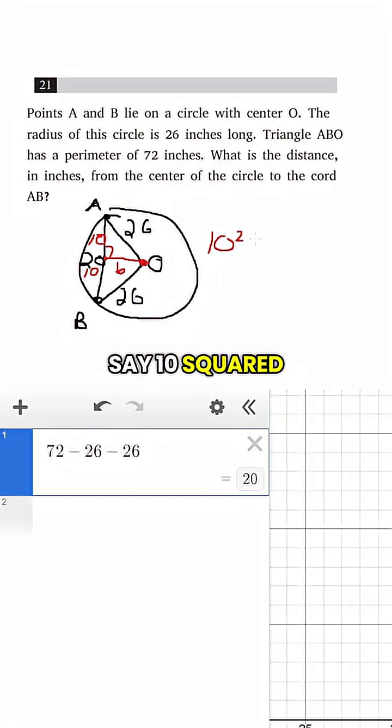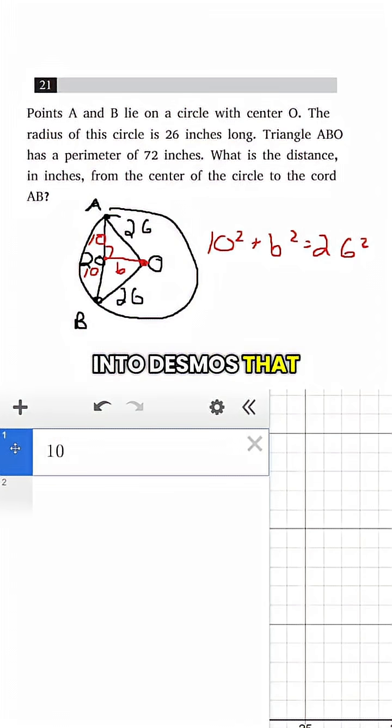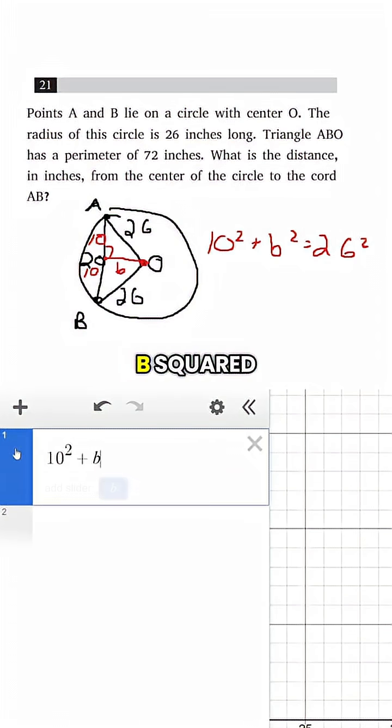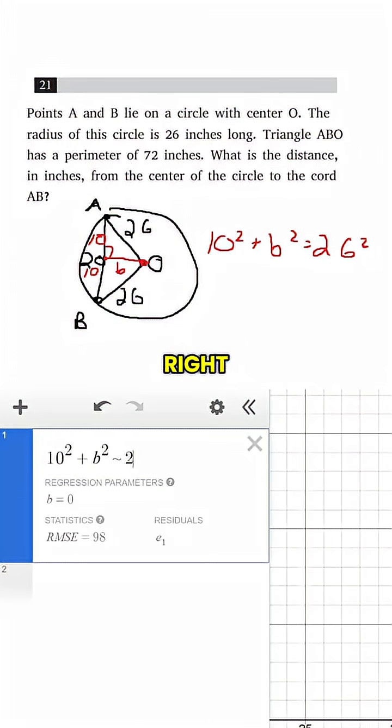So let's call this B. And we could say 10 squared plus B squared equals 26 squared. So then all I have to do is I could write into Desmos that 10 squared plus B squared is going to be equivalent using a tilde to 26 squared. And so then I would get that my answer for B is 24. So that is my answer.